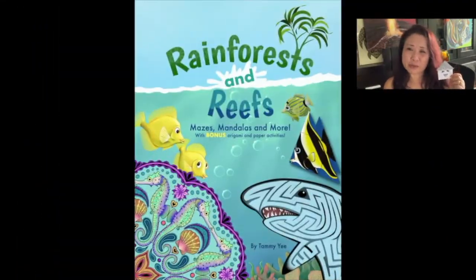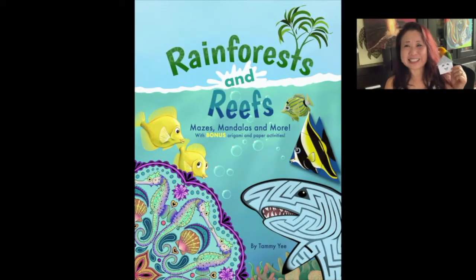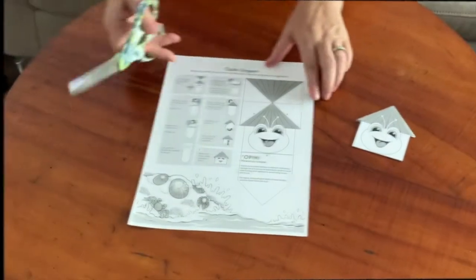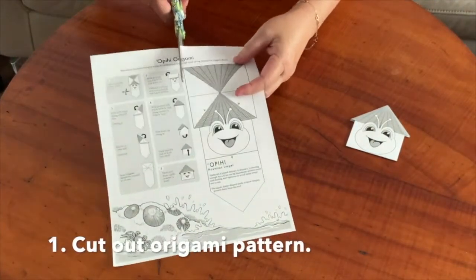This little pattern is from my book Rainforests and Reefs. So let's get started. Begin by cutting out your opihi origami pattern.